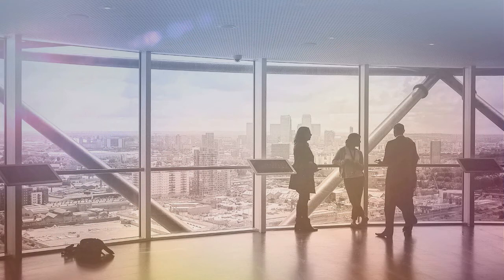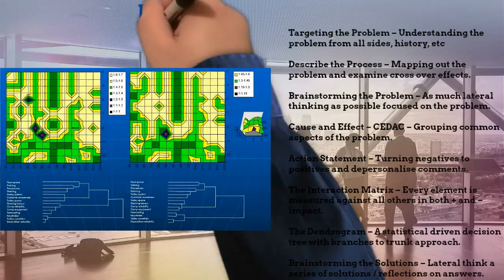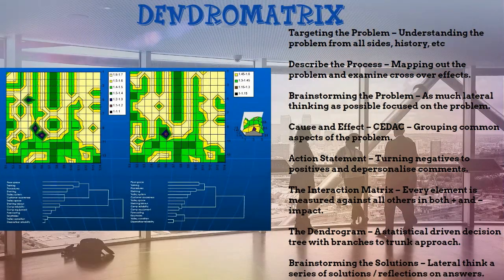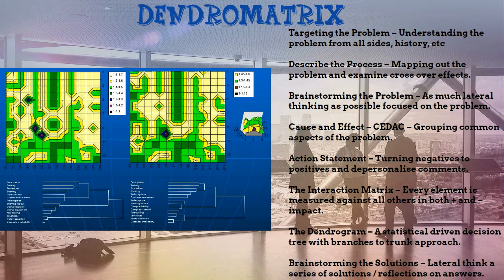Dendro matrix is applying Nolan's matrix to a TQM general purpose utility for problem solving. It generates maps of group-think generated from surveys or facilitated workshops. The map and dendrograms are used to facilitate responses to address problems.